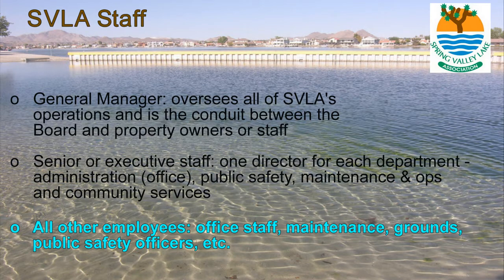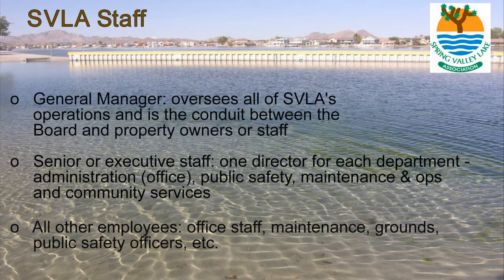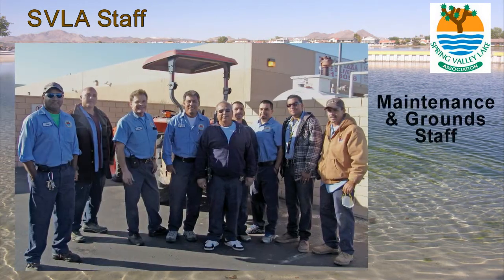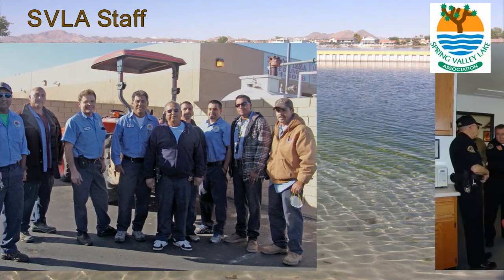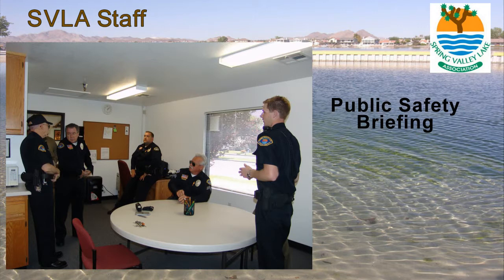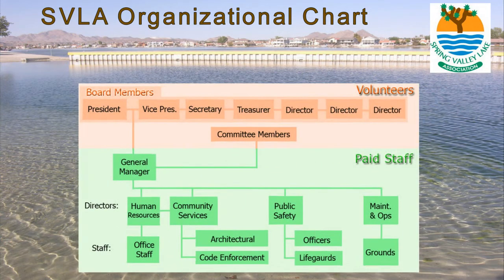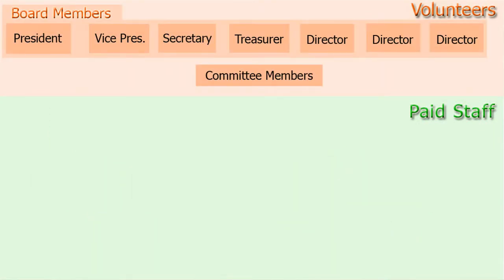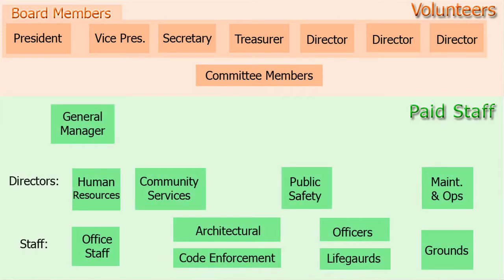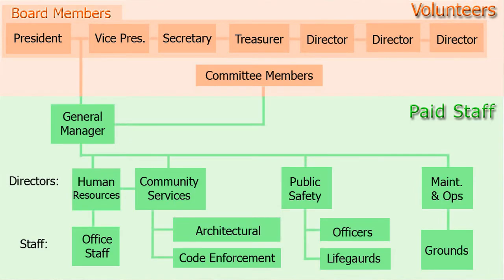Other employees include office staff, maintenance, grounds, public safety officers, etc. Here are some pictures of SVLA staff. This is a general organizational chart that shows the relationships between the board, committees, and staff. At the top, you have the board and committee members who are volunteers. Then you have the various staff members. These lines connect all the parties together, as well as defining the level of order from top to bottom.